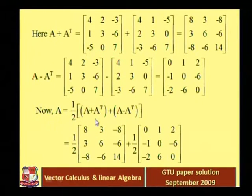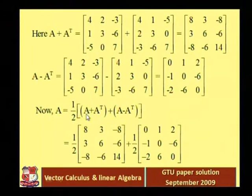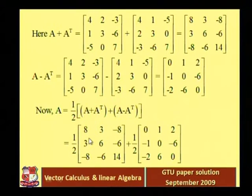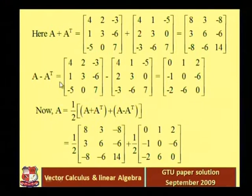You can verify that the first matrix, A plus A transpose divided by 2, is symmetric. The constant 1/2 has no effect on the symmetry property. Whenever we multiply any symmetric or skew symmetric matrix by a constant, it remains symmetric or skew symmetric respectively. So the first matrix A plus A transpose is symmetric and A minus A transpose is skew symmetric.